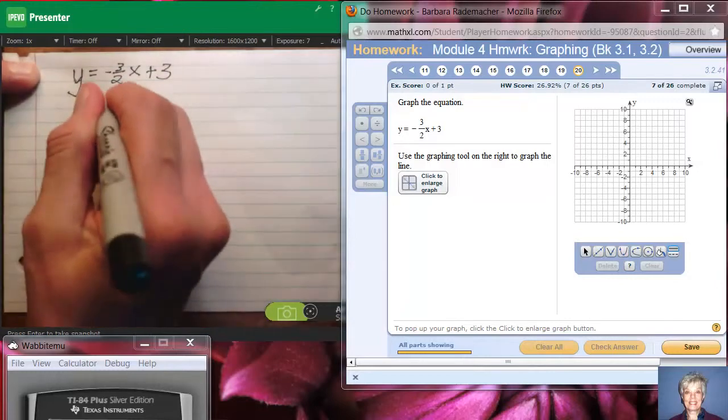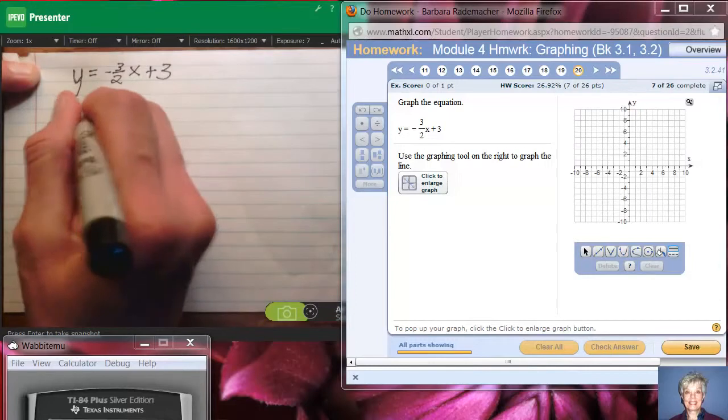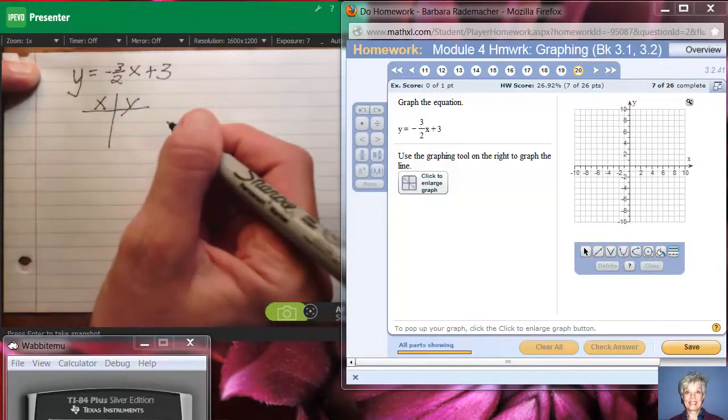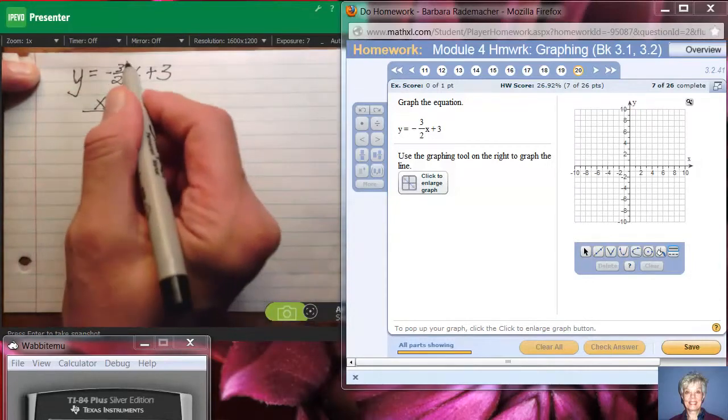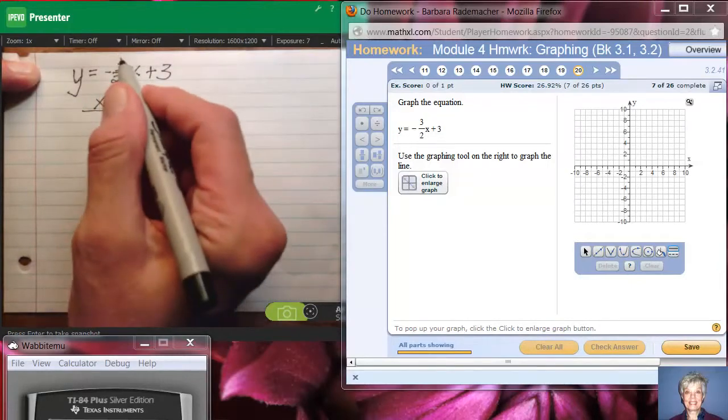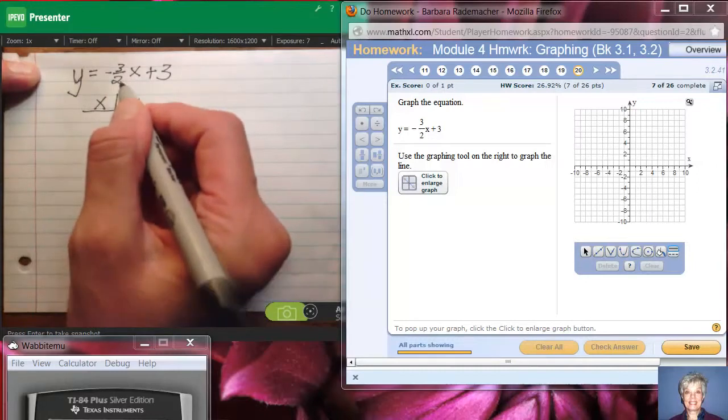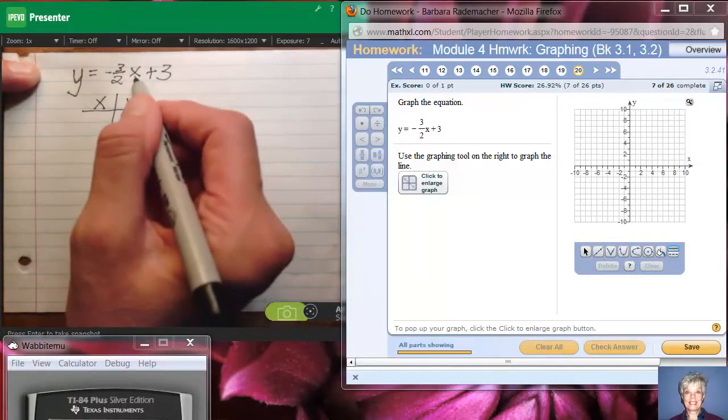I'm going to make an xy table, and all you need for graphing in MyMathLab is two points. So when you have a fraction in this position, it's much easier to choose a multiple of 2 or 0 for the x.